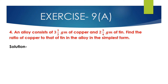Now we will solve question number 4. An alloy consists of 3.5 grams of copper and 2 and 3/4 grams of tin. Find the ratio of copper to that of tin in the alloy in the simplest form. It is given that the alloy consists of 3.5 grams of copper and 2 and 3/4 grams of tin, and we have to find the ratio of copper to tin.